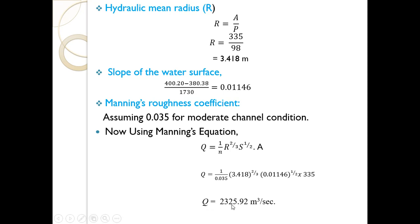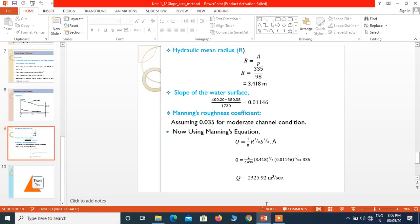This gives Q = 2325.92 cubic meters per second. In this way, using the slope area method, we can find the discharge. This method involves applying Manning's formula to get velocity, then multiplying by cross-sectional area to get discharge. With this, the topic of slope area method and stream gauging is completed. Thank you.